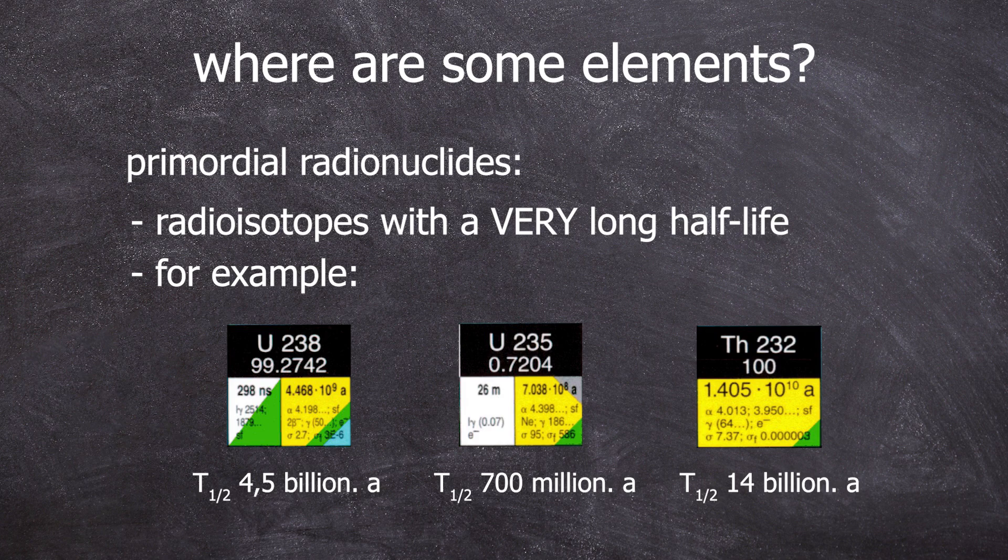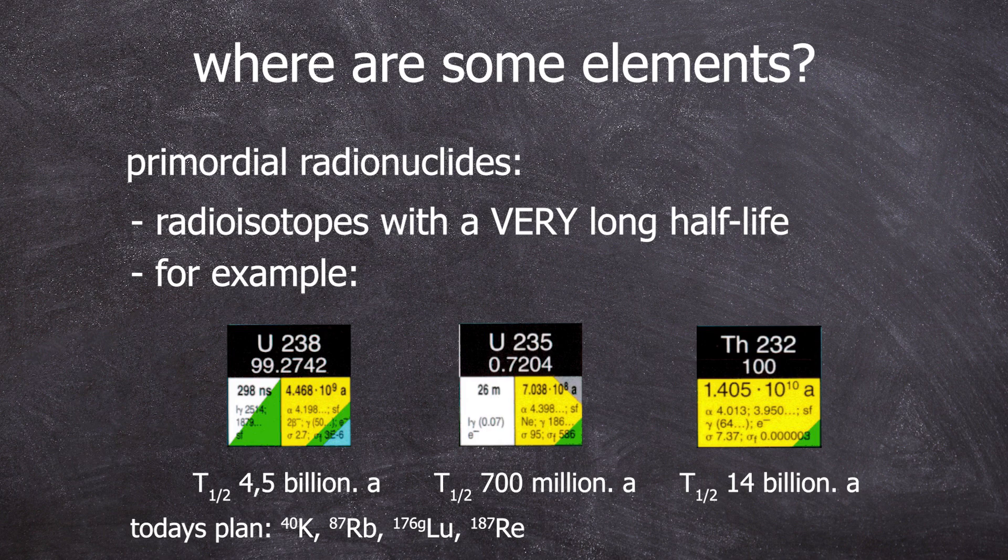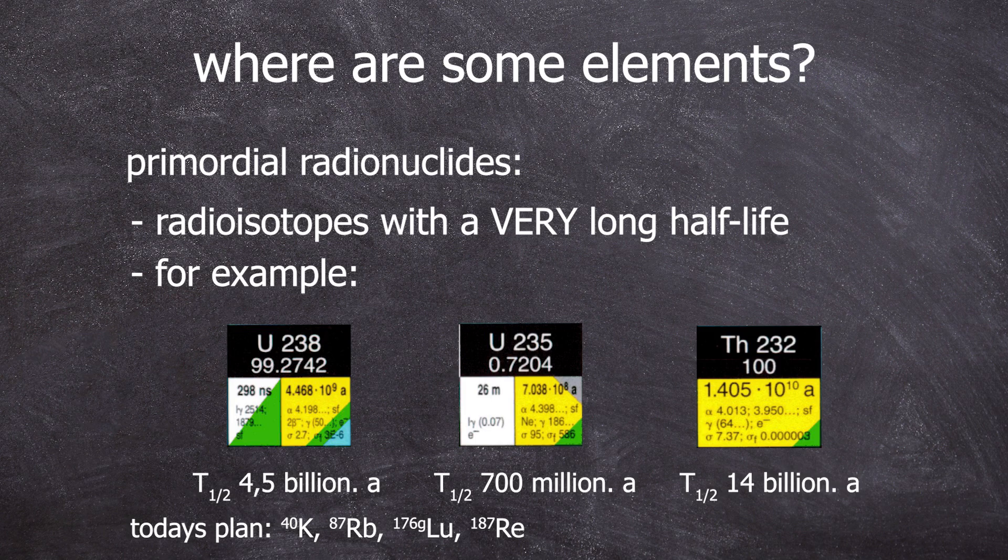However, measuring those isotopes would be lame as they are already well known. Today, we are focusing on somewhat exotic primordial radionuclides: potassium-40, rubidium-87, lutetium-176, and rhenium-187.